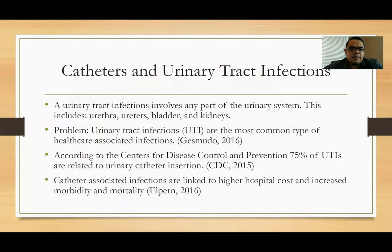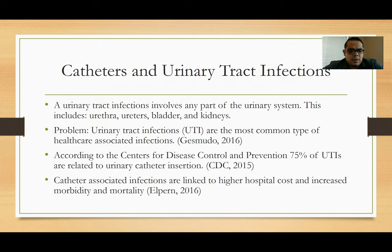Catheters and urinary tract infections. A urinary tract infection involves any part of the urinary system, including the urethra, ureters, bladder, and kidneys. The problem is that urinary tract infections, also known as UTIs, are the most common type of healthcare-associated infections. According to the Centers for Disease Control and Prevention, 75% of UTIs are related to urinary catheter insertions. Catheter-associated infections are linked to higher hospital costs and increased morbidity and mortality.